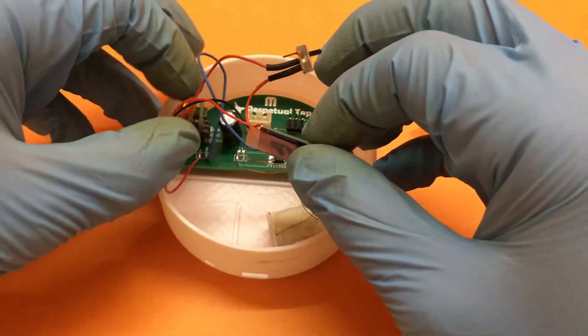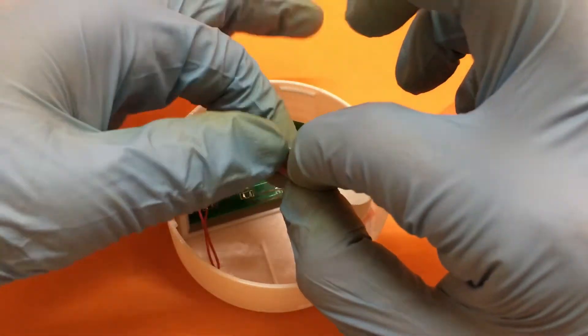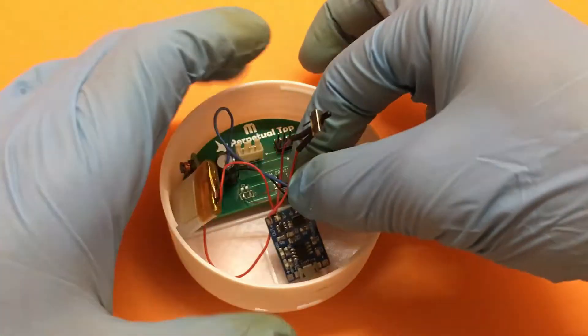Now place the battery charge circuitry and the switch. Let's first remove the double-sided tape.